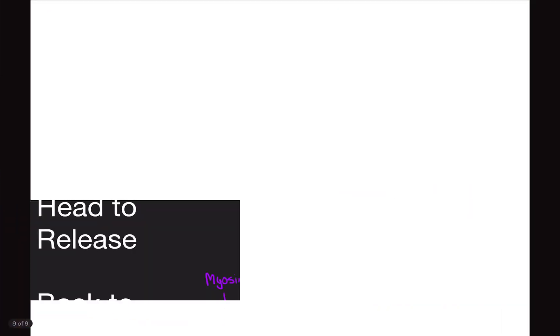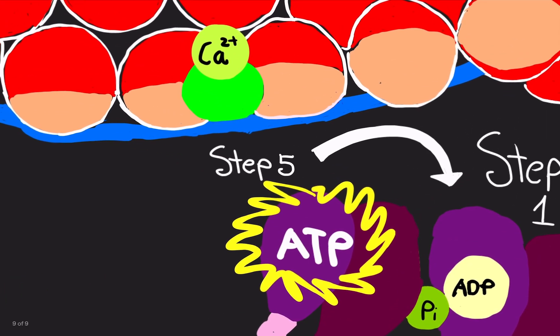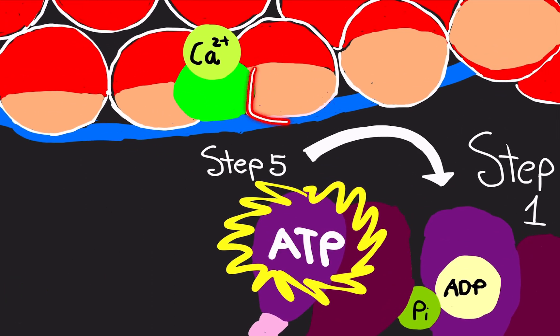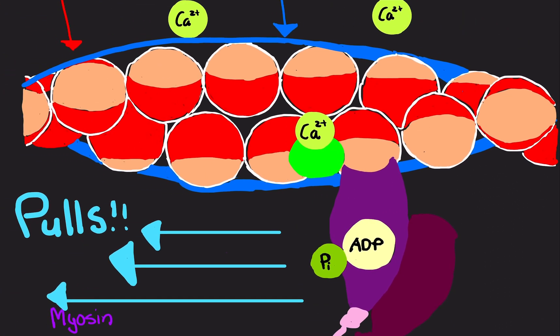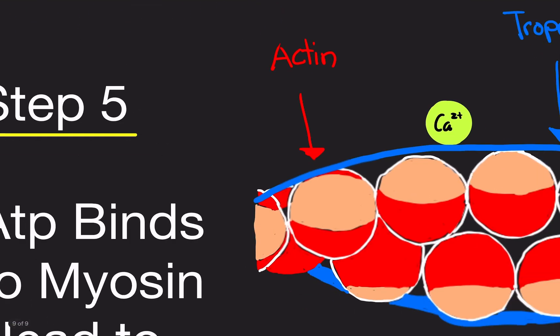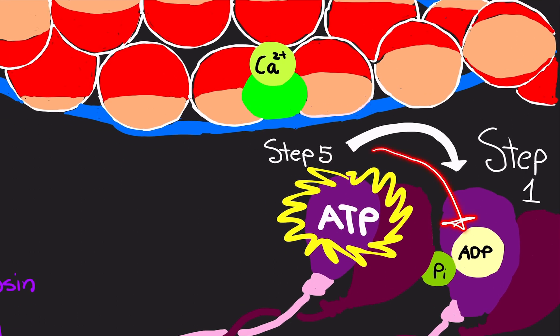You're probably wondering: why ATP? What's the purpose? Originally the myosin heads were bound here — they want to stay here. They don't want to let go; they're happy in this position. But we need to let go so we can go back to rest. The only way they'll ever let go is if ATP comes along and binds, and that causes the release. Once it's released, we're back to step one — back to rest.